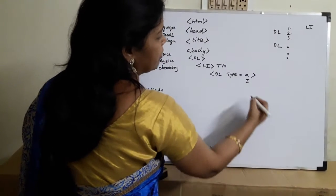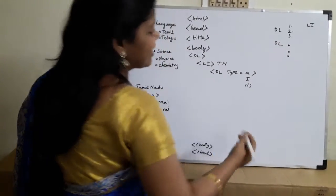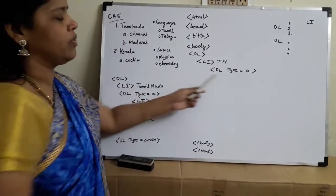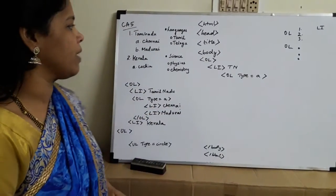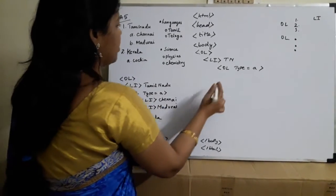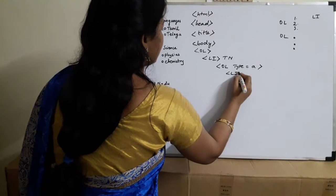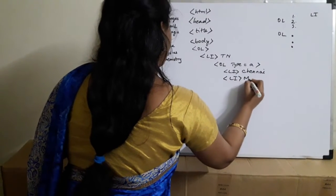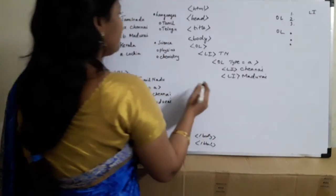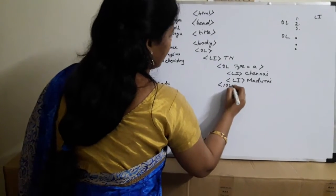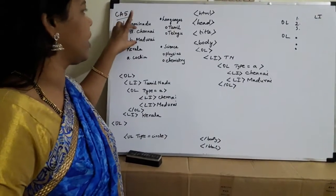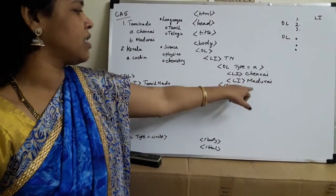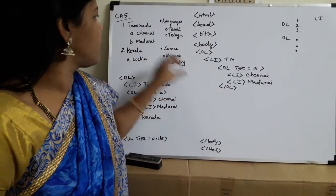We are using type equal to A format, so the listing starts with A. Inside that OL type=A, I write LI for Chennai and the next LI for Madurai. So A is Chennai and B is Madurai. This inner ordered list is then closed with the closing OL tag. To summarize: within Tamil Nadu I have created a nested ordered list with type=A, where A is Chennai and B is Madurai.